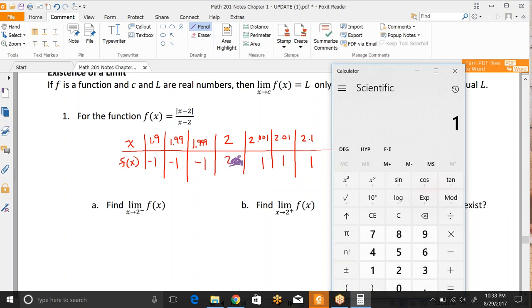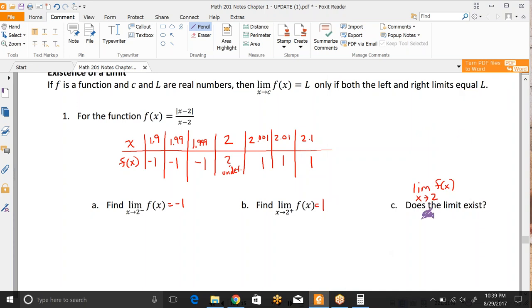You cannot plug 2 into the function. So we know that right now, we have an undefined value at the actual 2. That means it's a restricted domain. But what we're seeing is that on either side, you're just kind of fixed at a specific number. And they're not the same. So the limit as x approaches 2 from the left is negative 1. The limit as x approaches 2 from the right is positive 1, because this is just staying positive 1 as it gets closer. And because those two limits do not equal the same thing, then the limit does not exist. And we just write D, N, E. So limit does not exist.